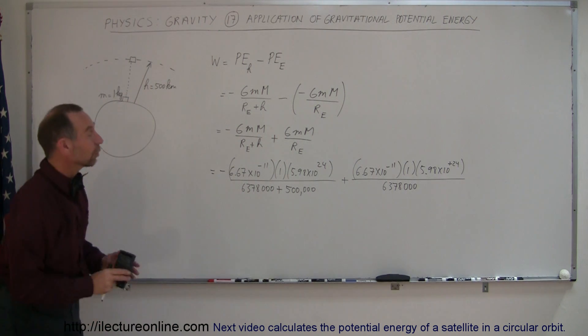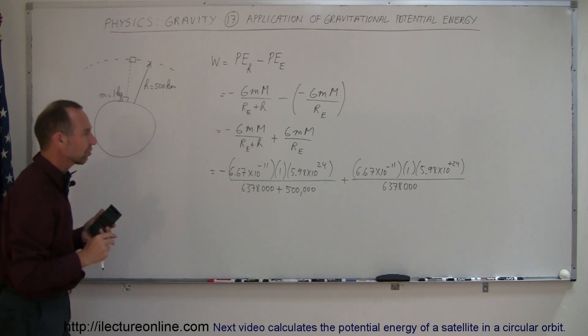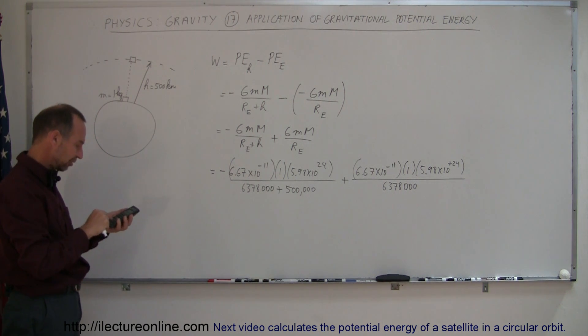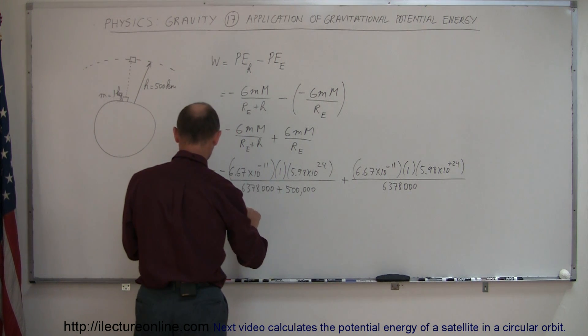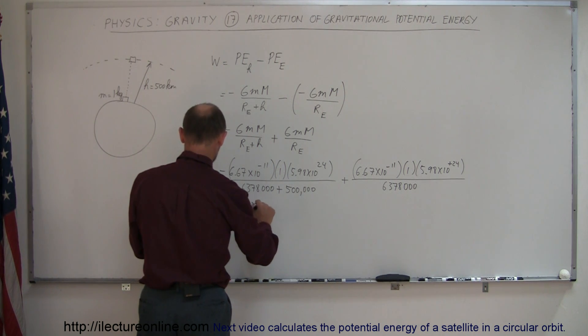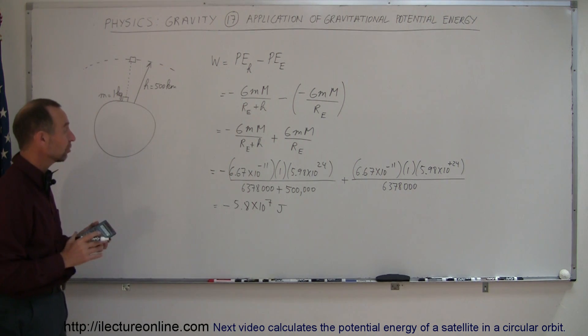All right, so let's calculate those individually. I'm doing it individually instead of factoring out what's common so it gives you a better understanding of what's going on. So taking the first number here, 6.67e-11 times 5.98e24 divided by 6,878,000 equals, and converting it to scientific notation, this is equal to minus 5.8 times 10 to the 7th, and of course that would be joules because we're looking for energy here.